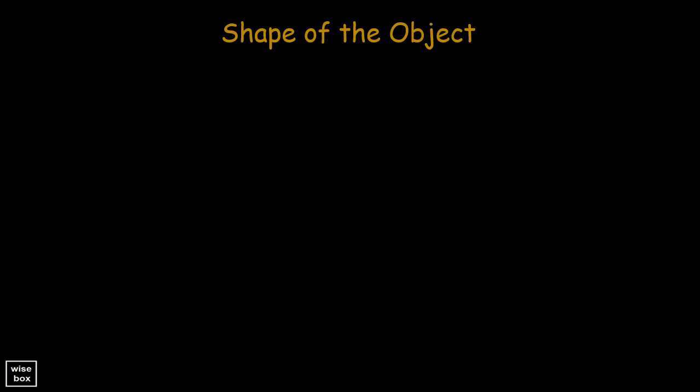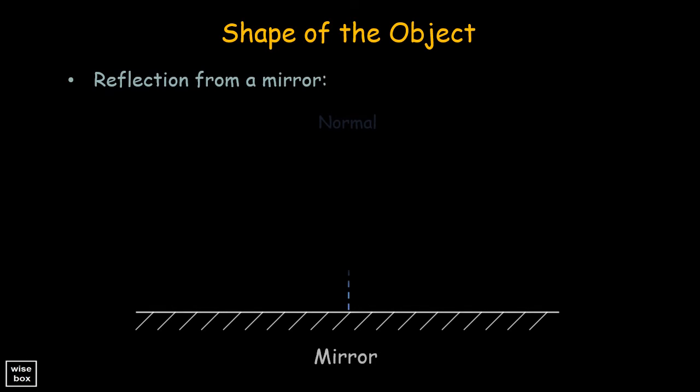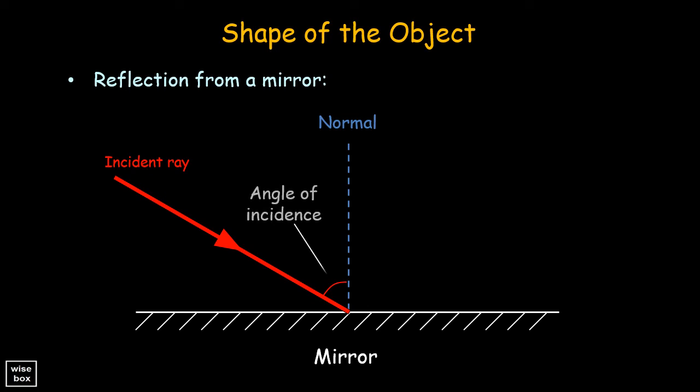To see how the shape affects the reflection of light, let's look at reflection from a mirror. An incident ray of light will form an incident angle from the normal line. This normal line is the perpendicular line from the surface. Then, the reflected ray of light produced will in turn also have an angle of reflection measured from the normal line.